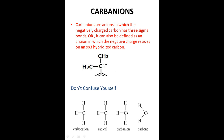This carbon is sp3 hybridized. It has two electrons in each of four positions, therefore it requires four different orbitals for its hybridization. So we can also define carbanions as anions where the negative charge resides on an sp3 hybridized carbon. So every sp3 hybridized carbon carrying a negative charge qualifies to be called a carbanion.